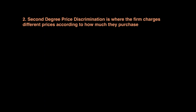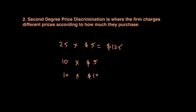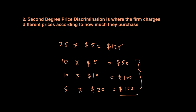For example, if a consumer uses 25 units at $5 each, total revenue is $125. But with price discrimination, the first 10 units are charged $5 ($50), the next 10 units $10 ($100), and the last 5 units $20 ($100). This generates $250 in total — double the revenue — because different prices are charged for different quantities purchased.